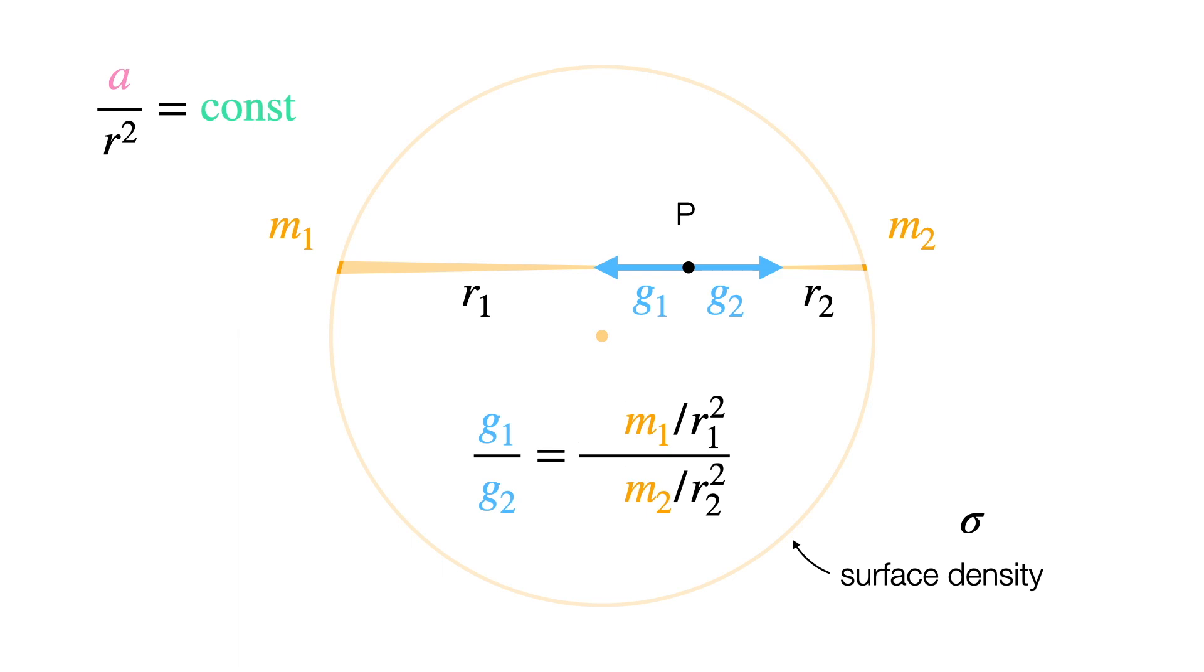So if we want to convert some area on the sphere into the mass it contains, we just multiply the area by sigma. Let's plug this in so we can work in terms of areas instead of masses. And there go the sigmas. So we're left with areas divided by distances squared. But hang on, we can use our relation from earlier and replace both of these by the same constant.